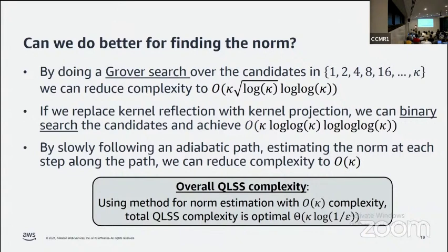So if we use this final method for norm estimation at O(κ) cost and then do the algorithm mentioned before, we end up with an optimal quantum linear system solver with optimal complexity. If we use one of these other methods, we'll end up with a term that's nearly optimal but off by this log κ factor.